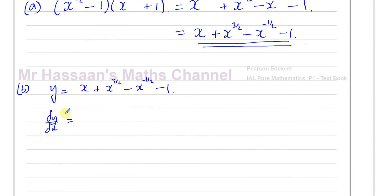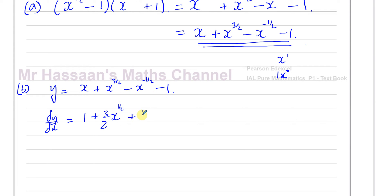Now we differentiate the expression. x is x to the power of 1; differentiating gives 1. For x to the power of 3 over 2, multiply by the power to get 3 over 2, then reduce the power by 1: 3 over 2 minus 1 equals 1 half, giving 3 over 2 times x to the power of 1 half. For negative x to the power of negative 1 half, multiplying by the power gives plus 1 half x, and reducing the power: negative 1 half minus 1 equals negative 3 over 2. The constant term minus 1 differentiates to 0 and is dropped.